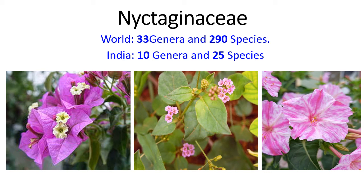Good morning students. Today we are going to learn about family Nyctaginaceae. The magnitude of this family is shown here in this slide. This family is represented by 33 genera and 290 species throughout the world, and it is represented by 10 genera and 25 species in India.